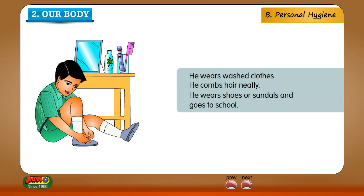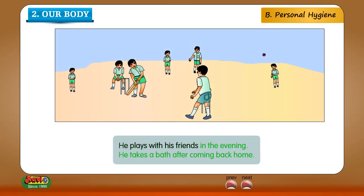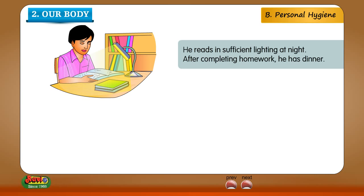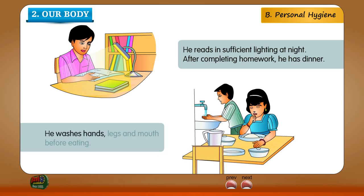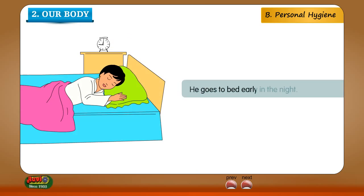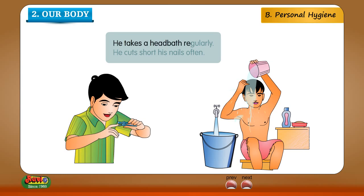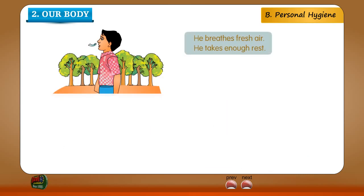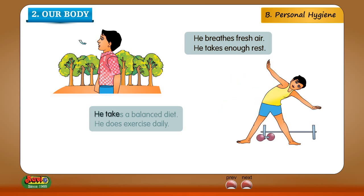He plays with his friends in the evening. He takes a bath after coming back home. He reads in sufficient lighting at night. After completing homework, he has dinner. He washes his hands, legs, and mouth before eating. He goes to bed early at night. He takes a bath regularly. He cuts his nails often. He breathes fresh air. He takes enough rest. He takes a balanced diet.